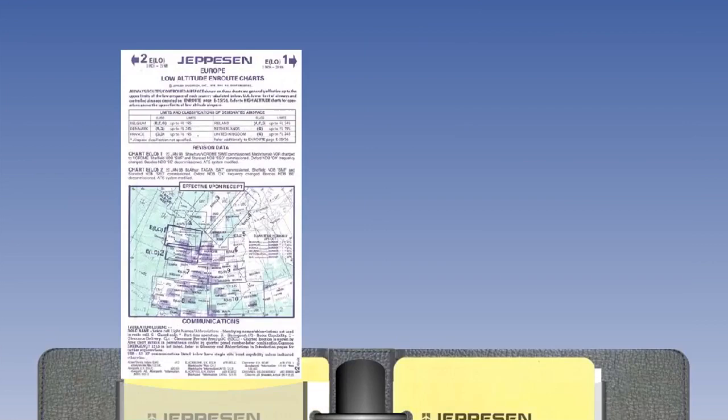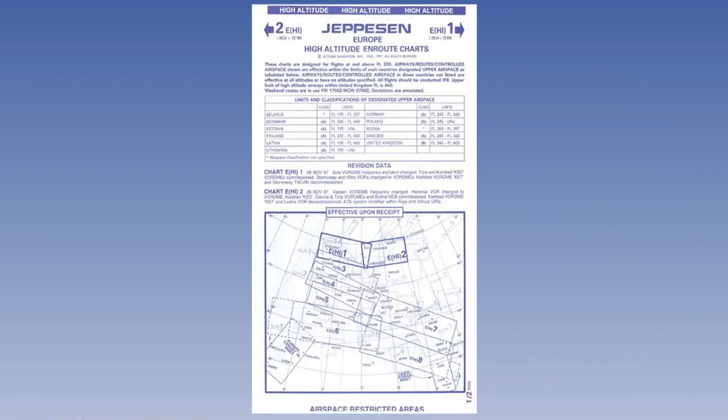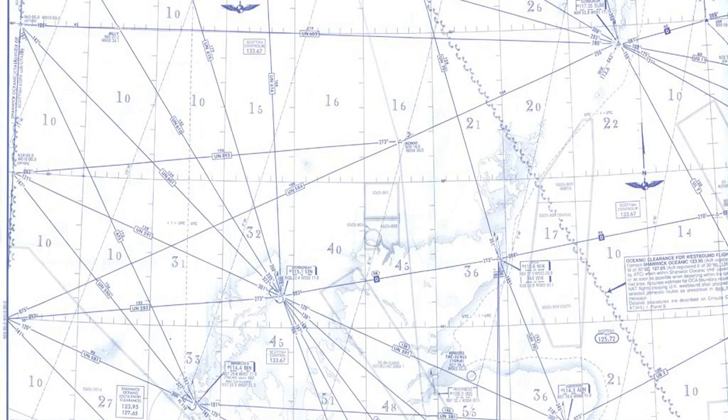Turn now to the high on-route section and take out the first chart, EHI1. The layout of the front panel is the same as the low-level charts, except that the flight-level diagrams are omitted, and standard semicircular flight levels are used throughout. Open the chart to the first fold. There are no shaded areas depicting uncontrolled airspace, since all upper-level airspace is controlled.